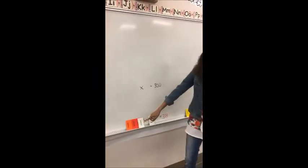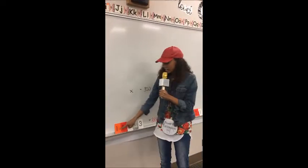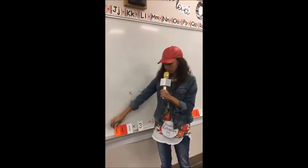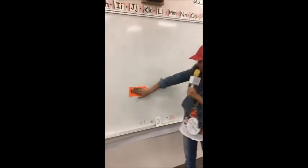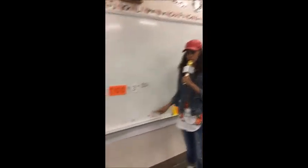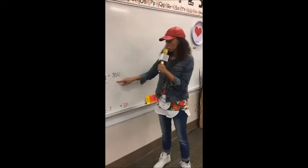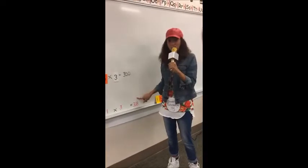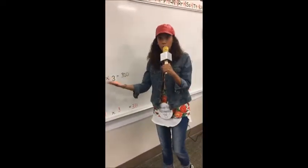For example, if we have 111 times three, I look at the front end digit, which is one in the hundreds place. To make it show its value, that's gonna be 100 times three. My original answer was 333. Using front end estimation, my new product is 300. Now 300 is pretty close to 333, so I know I have a reasonable answer.